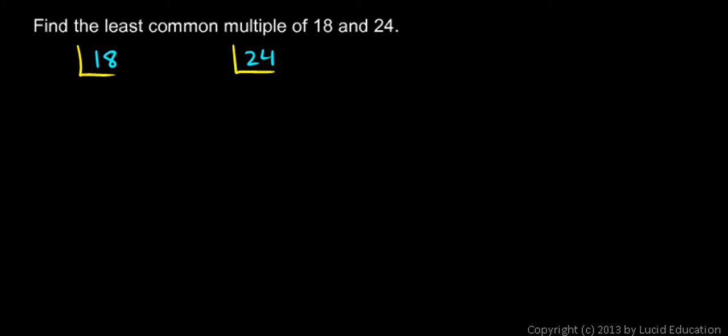18 can be written as 2 times 9, and 9 can be divided by 3 — it's 3 times 3. So the number 18 can be written as 2 times 3 times 3.